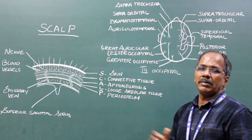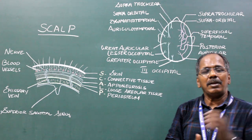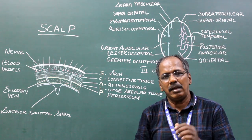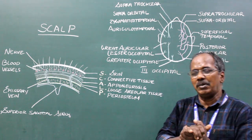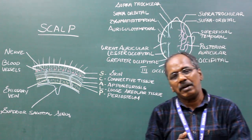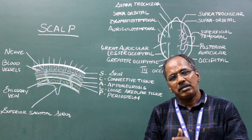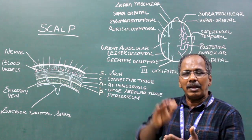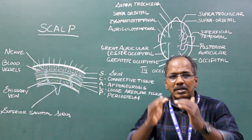Connective tissue or galea aponeurotica. It is made up of the occipitofrontalis muscle and its aponeurosis. The occipitofrontalis muscle has two bellies — anteriorly the frontal bellies and posteriorly the occipital bellies — connected in between by the aponeurosis. The frontal belly does not have any bony attachment; it arises from the skin over the superciliary arches. A transverse cut in the aponeurosis causes gaping of the scalp.